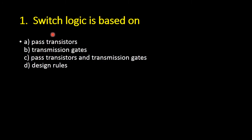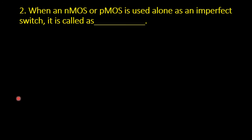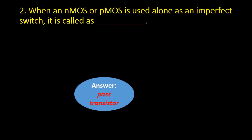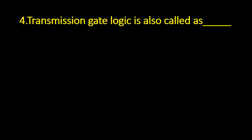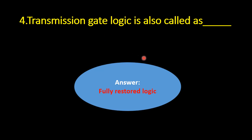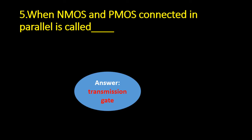Now let us see some important multiple choice questions with answers from this topic. First question: Switch logic is based on — Option A: Pass transistor, Option B: Transmission gates, Option C: Pass transistor and transmission gate, Option D: Design rules. The correct answer is Option C: Pass transistor and transmission gates. When NMOS and PMOS are connected in parallel, it is called a transmission gate.